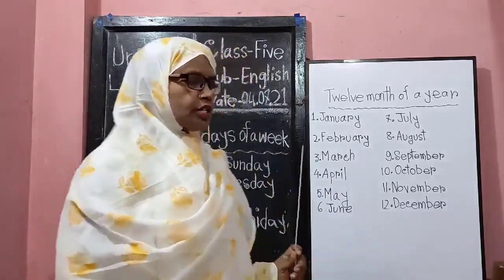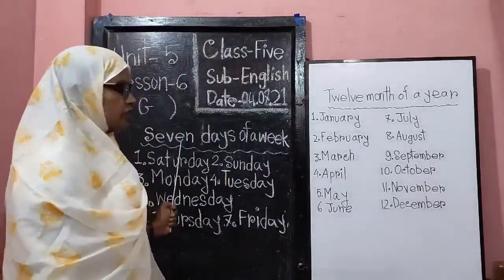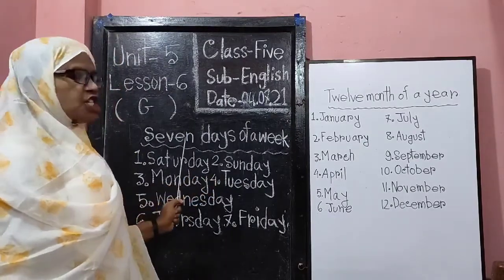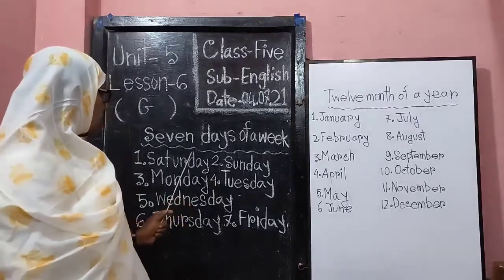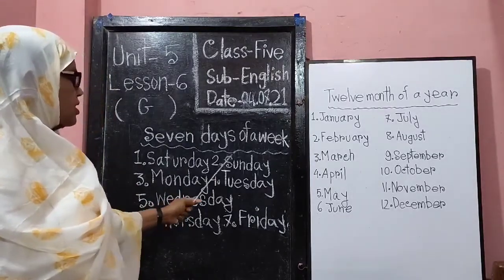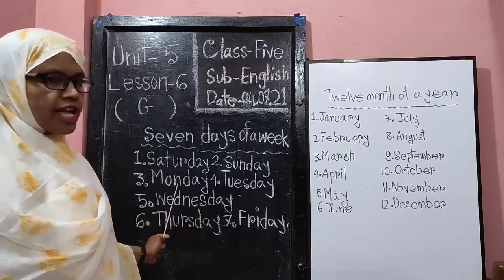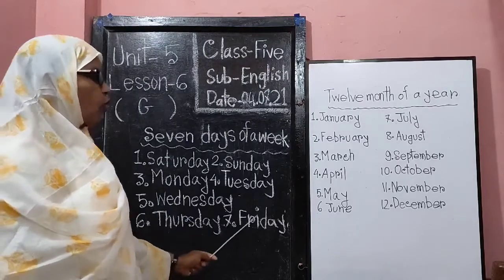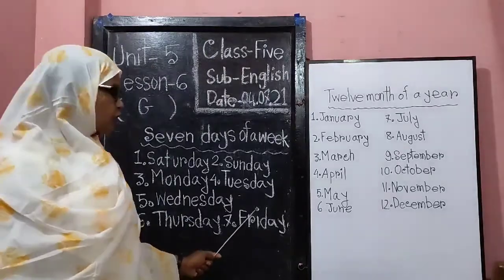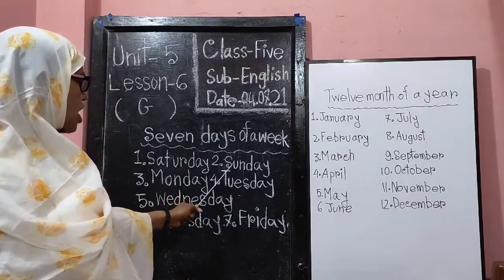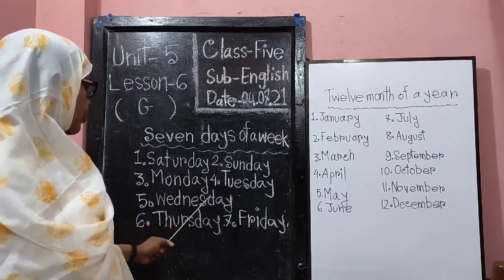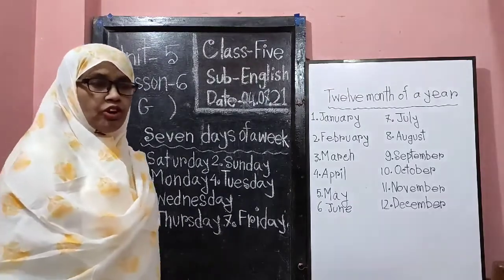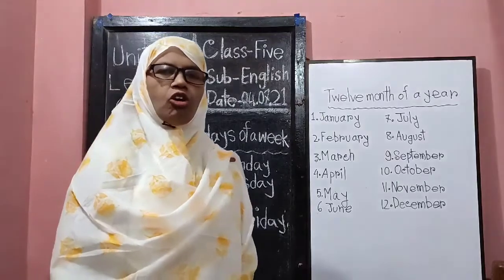Now, look at the board. Here, 7 days of a week: Saturday, Sunday, Monday, Tuesday, Wednesday, Thursday, Friday. Again: Saturday, Sunday, Monday, Tuesday, Wednesday, Thursday, Friday. There are 7 days of a week.